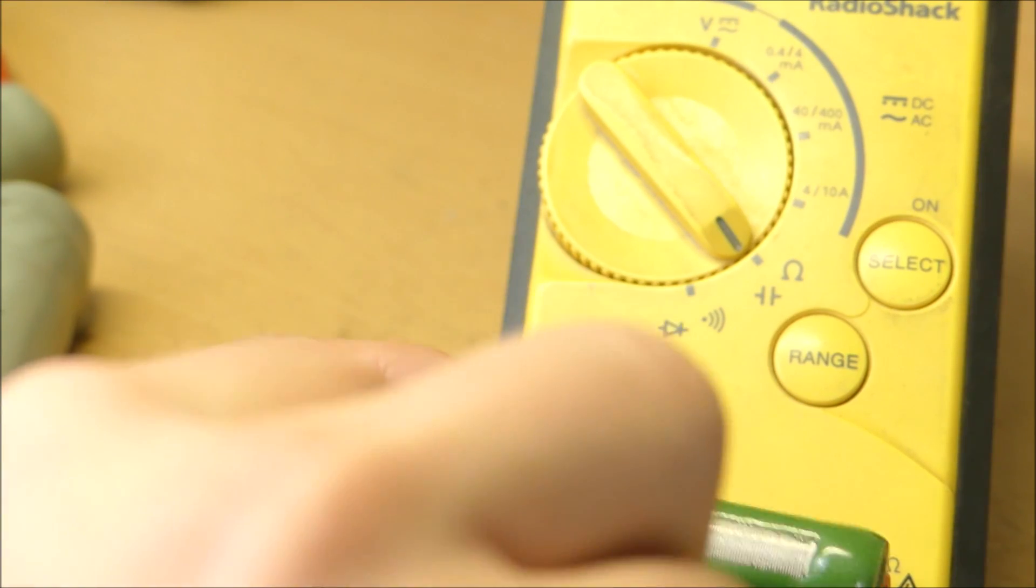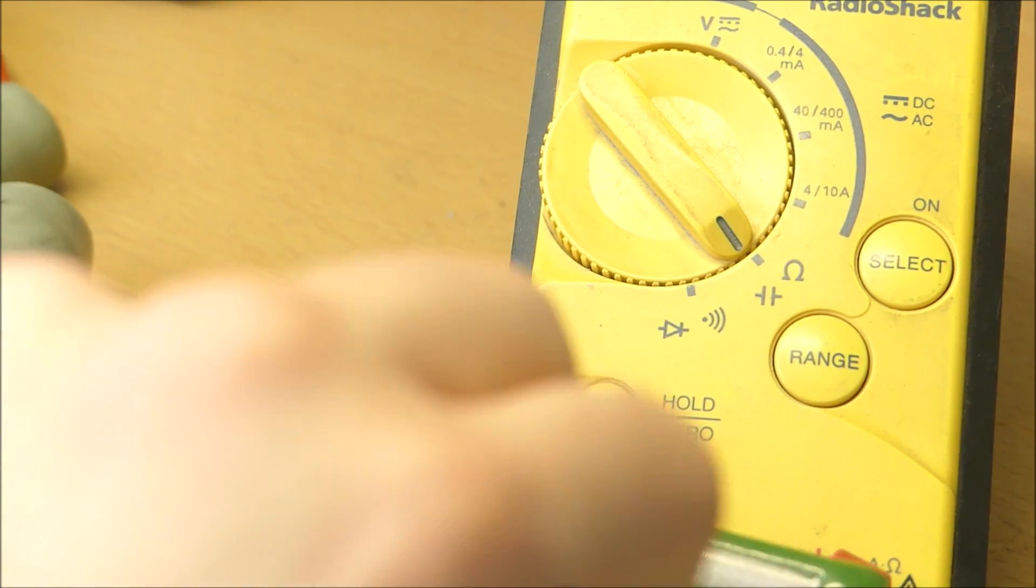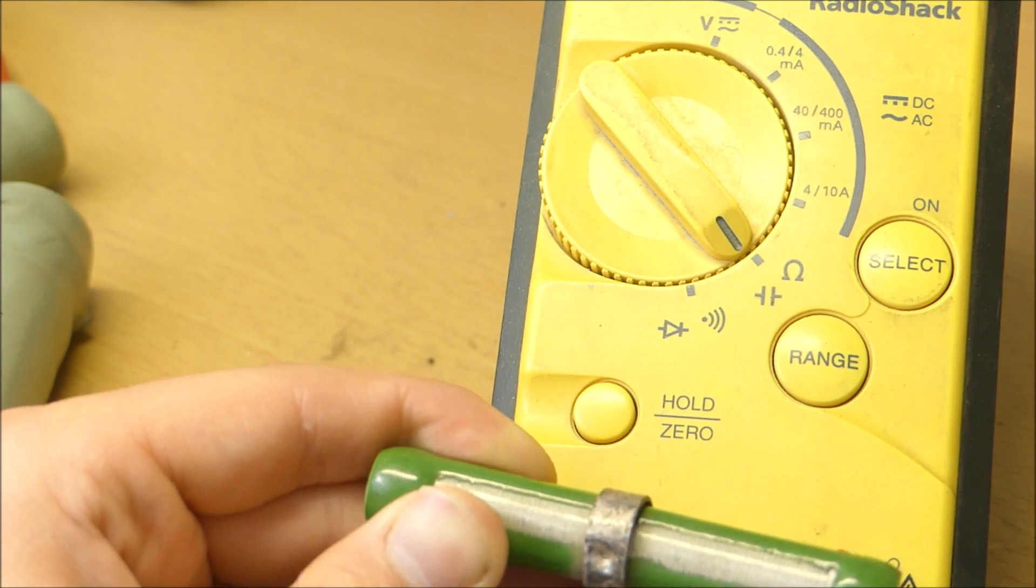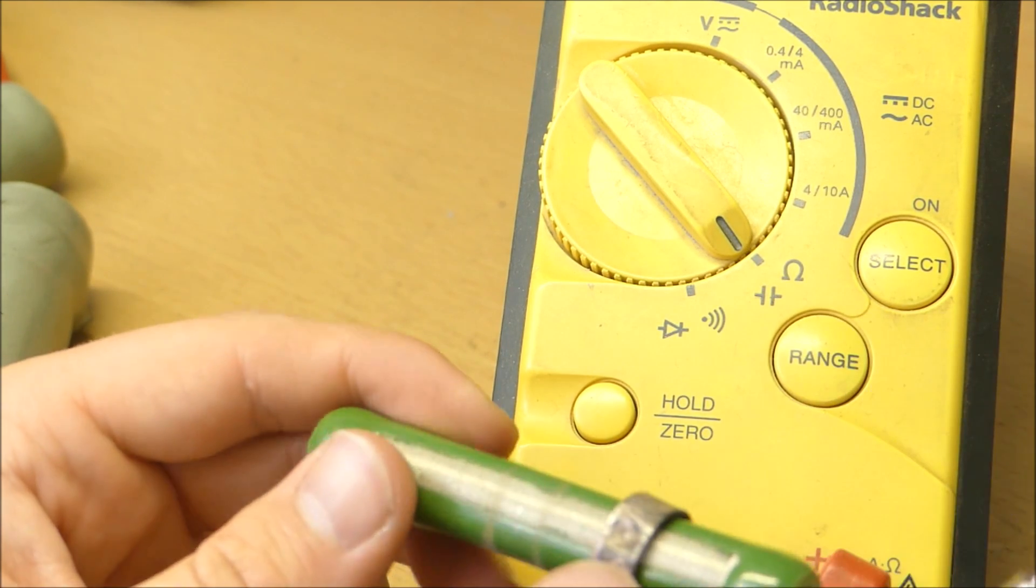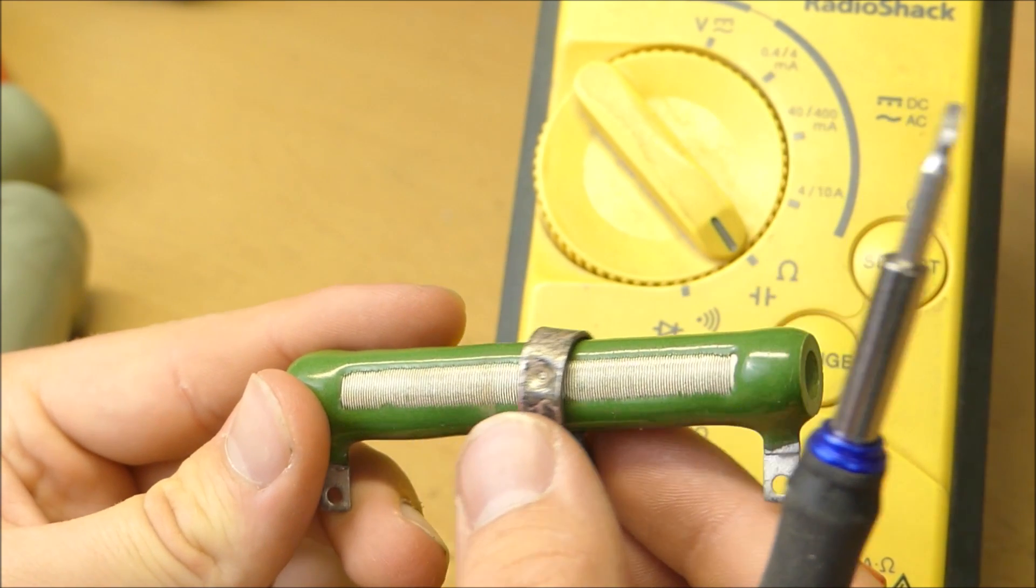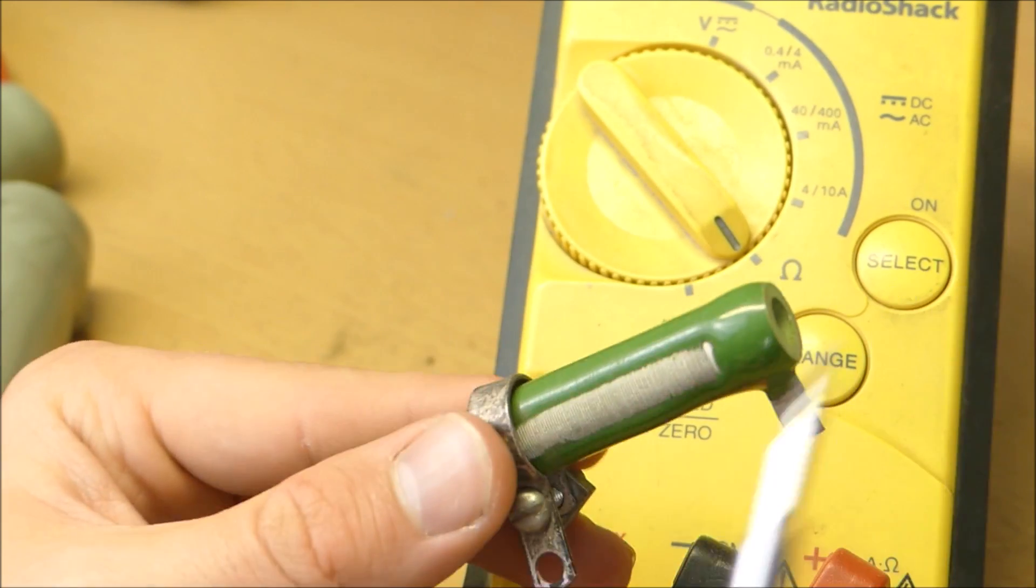So if we unscrew this screw that's holding this tap down, then we can slide around the tap and actually adjust varying voltages on this device, slide it all the way to the bottom or I can slide it up to the top. And depending on where I slide it, we can change the resistance at the center tap.